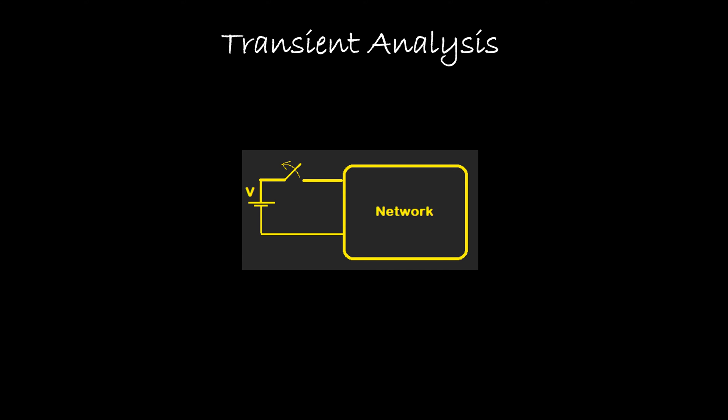Hello everyone. Today we are going to learn transient analysis, which is a very important topic in network analysis. Here we can observe a network which is connected or excited through a DC voltage through some switch. Let us say this voltage source is connected for a long time and the network has attained a steady state condition, and the voltage and current in the network are V1 and I1.